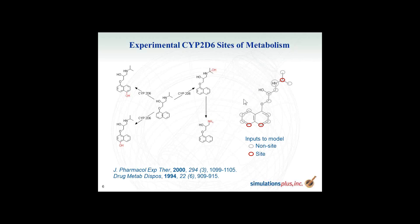As input to our model, we include all the potential sites on the molecule. Note that oxygen atoms in propranolol would not be marked as sites. The ones with red are the experimentally observed sites. When we build the model, each row would be an atom in this molecule, with a column indicating whether it was an observed site of metabolism or not, and we have many molecules in each model.